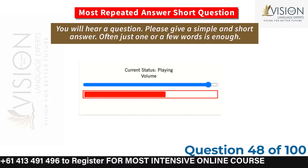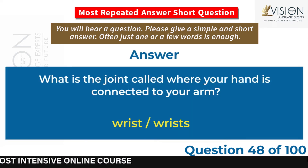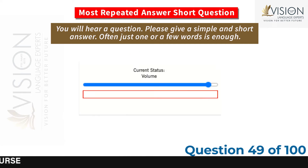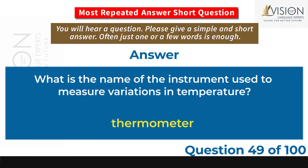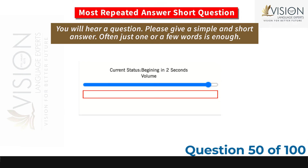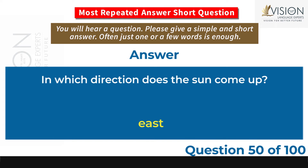What is the joint called where your hand is connected to your arm? Wrist. What is the name of the instrument used to measure variations in temperature? Thermometer. In which direction does the sun come up? East.